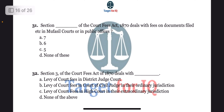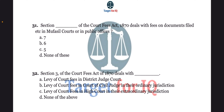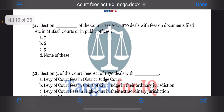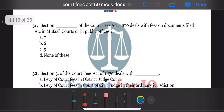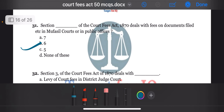Next question: section dash of the Court Fees Act 1870 deals with fees on documents filed in Mufassil Courts or in Public Offices. The options are A. 7, B. 6, C. 5, or D. None of these. The correct answer is option B. 6.